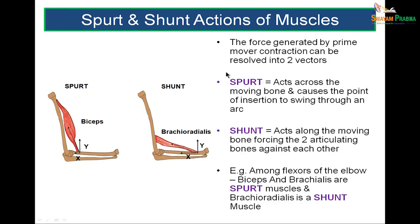Spurt and shunt actions of muscles: a spurt muscle acts across the bone and the point of insertion swings through an arc, whereas a shunt muscle acts along the bone and forces the two articulating surfaces together. Brachioradialis pulls the forearm bones towards the humerus — this is shunt action. Biceps and brachialis perform spurt action at the elbow. So among elbow flexors, biceps and brachialis are spurt muscles while brachioradialis is a shunt muscle.